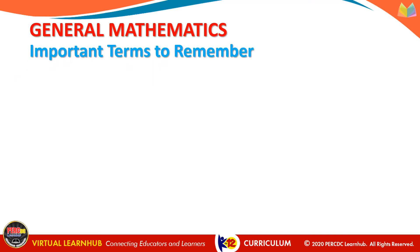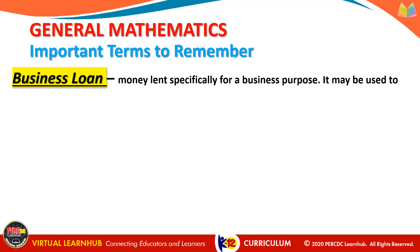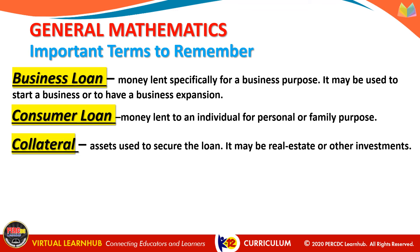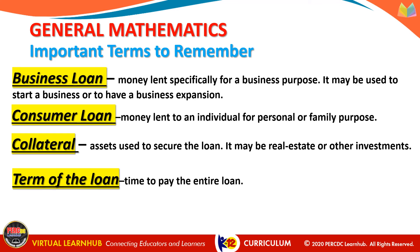The important things to remember in this topic of business and consumer loans are: a business loan is money lent specifically for a business purpose — it may be used to start a business or for business expansion. A consumer loan is money lent to an individual for personal or family purposes. Also, collateral refers to assets used to secure the loan, which may be real estate or other investments. And the term of the loan is the time period to pay the entire loan.